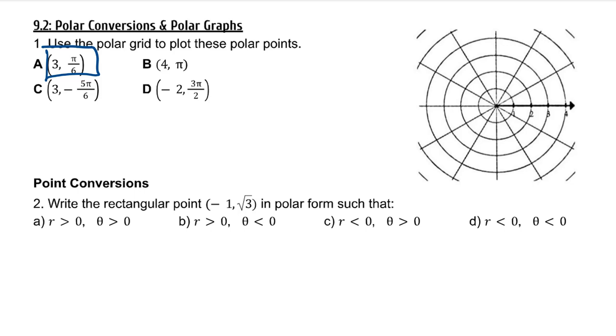If we're looking at r equals 3, that would be this concentric circle, and then we'll go up positive pi over 6. To graph 4 pi, we'll go to the circle with radius 4, and our angle would be pi.